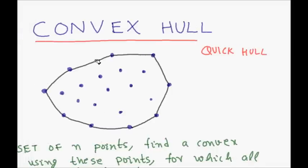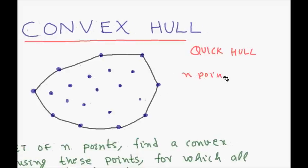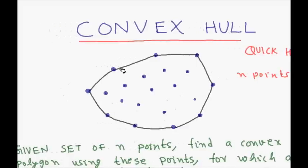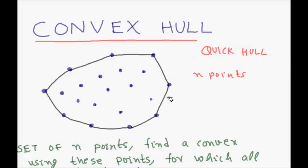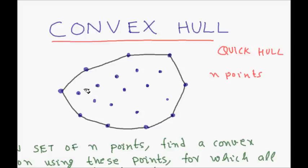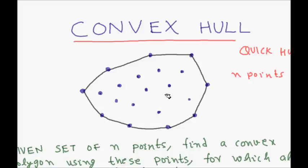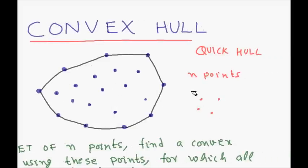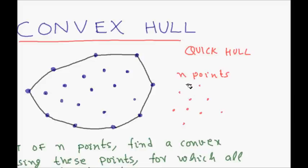So what is a convex hull? If you are given n points in a two-dimensional plane, you have to find a convex polygon for which all other n points are inside that polygon. For example, given all these points, you form the convex hull such that all other points are inside it. This convex polygon, which has five sides, covers all other points inside it — this is the convex hull for all these n points.